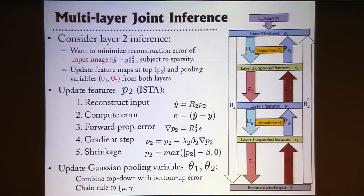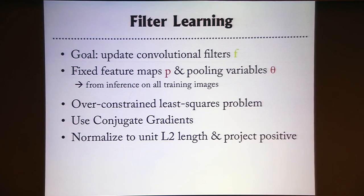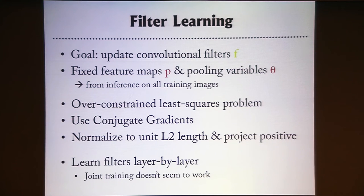For learning the filters: run inference on all training images to get feature maps and pooling variables, then updating the filters is an over-constrained least squares problem solved with conjugate gradients, which converges very nicely. Filters are then reprojected to unit length and positivity. One slightly annoying detail is that we have to learn filters layer by layer — training all filters jointly doesn't seem to work very well.